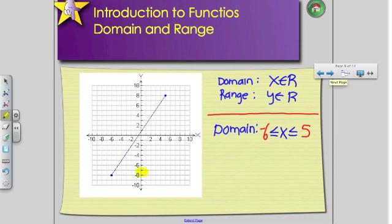In terms of my Y coordinates, my Y coordinates start at negative 8, and they go all the way until positive 8. So my range is going to reflect this. Y is in between negative 8 and positive 8. So that is linear functions, domain and range.